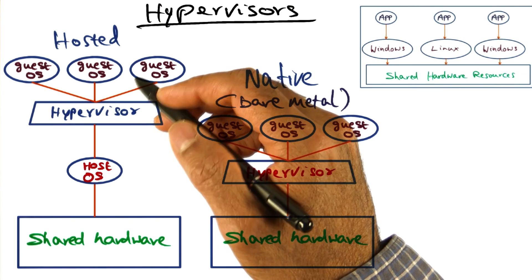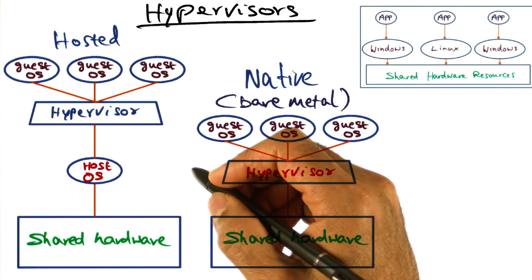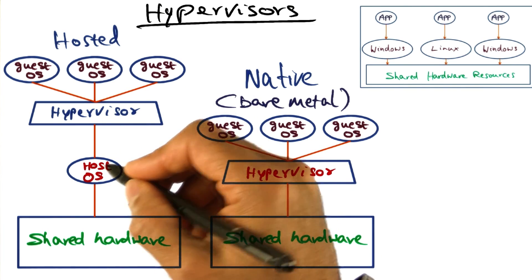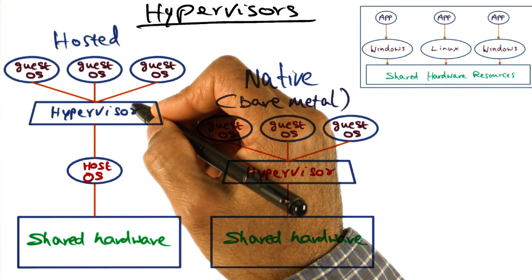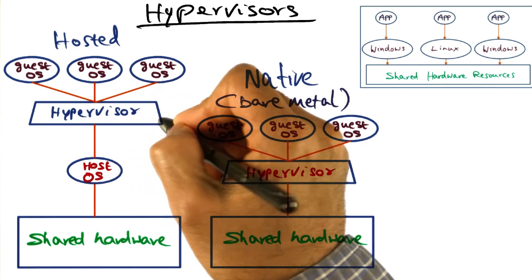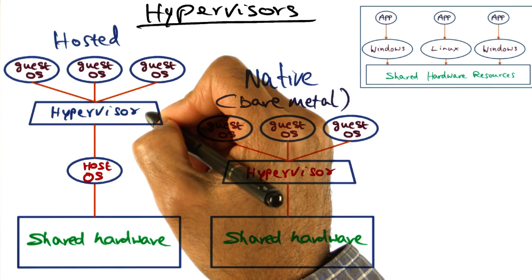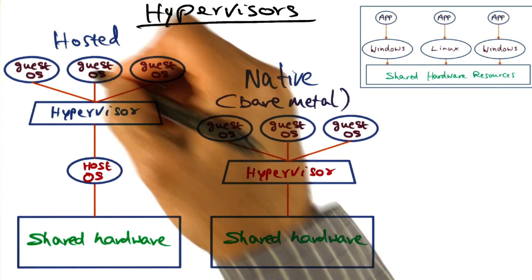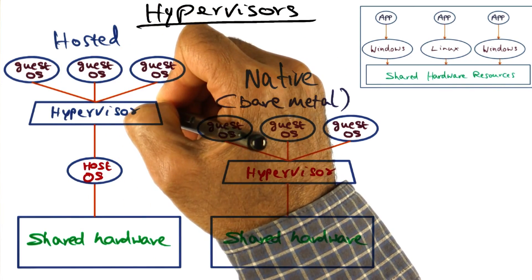The second type of hypervisor is what is called the hosted hypervisor. The hosted ones run on top of a host operating system and allow the users to emulate the functionality of other operating systems. So the hosted hypervisor is not running on top of the bare metal, but it is running as an application process on top of the host operating system. And the guest operating systems are themselves clients of this hosted hypervisor.